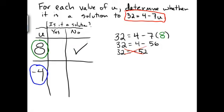Okay, now let's try it on the other case. So in the other case, we have the number supposedly negative 4. So again, write down the equation. 32 equals 4 minus 7 times some object u, but in this case we want u to be equal to negative 4.